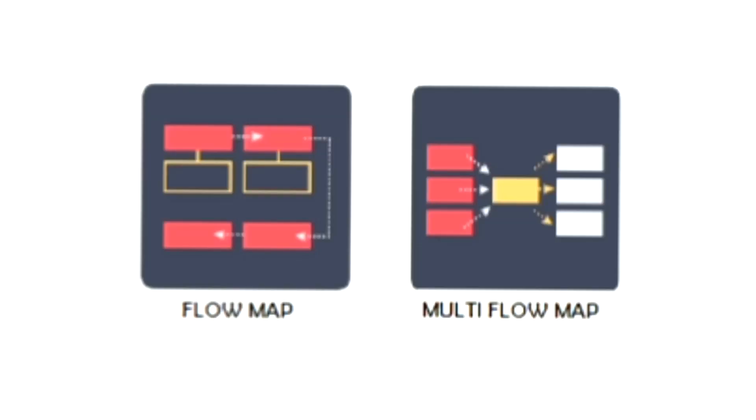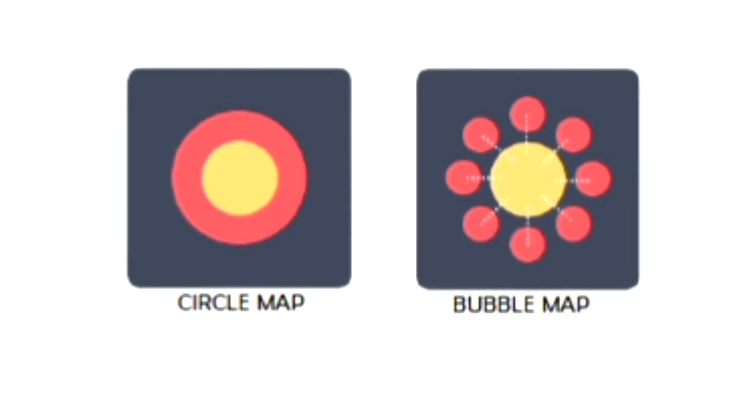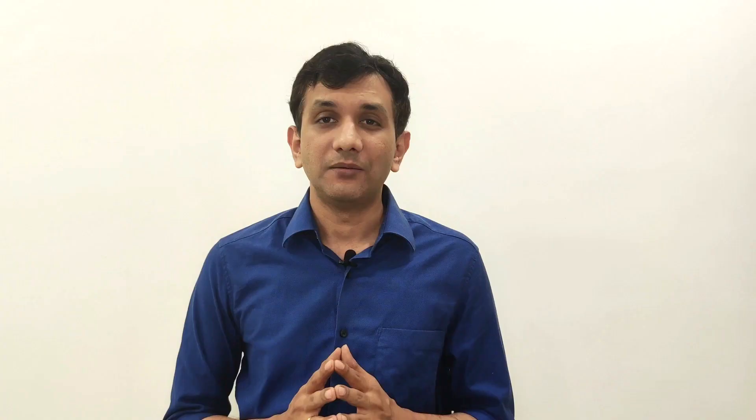There are various types of mind maps available, such as the flow mind map, multi-flow mind map, brace map, tree map, circle map, bubble or spider maps, and double bubble maps.